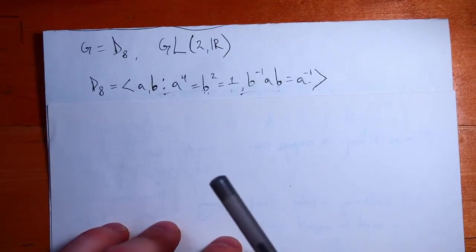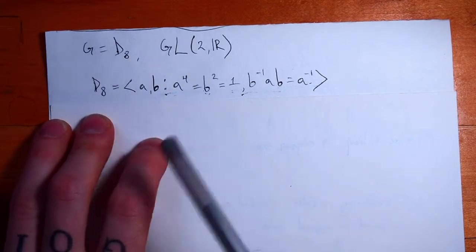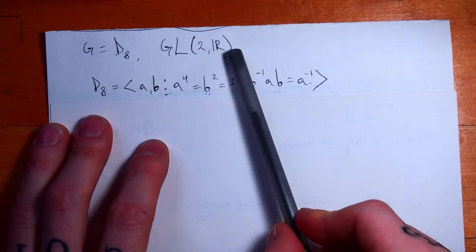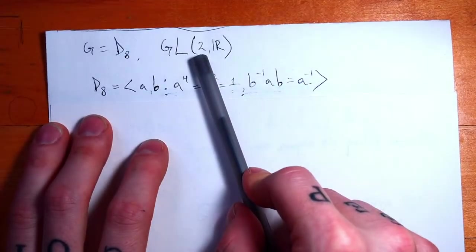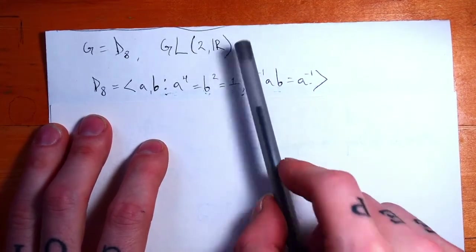Okay, so the first example that I'd like to look at involves the group D8. D8—that's the symmetries of a square. And we're going to be mapping to GL(2,R), so invertible matrices of dimension two, the two by two matrices with real entries.